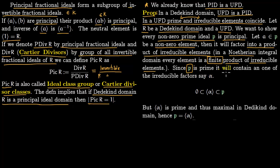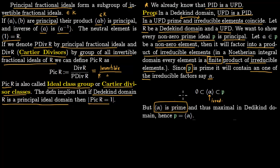Since P is prime it contains at least one of the irreducible factors — call it α. So we have (0) ⊂ (α) ⊆ P. Now α is prime, precisely because in a UFD prime and irreducible coincide, and we started with a Dedekind domain that is a UFD. So α is prime, and in a Dedekind domain prime ideals are maximal. Therefore (α) is maximal, and since (α) ⊆ P with P prime, we must have (α) = P. Hence this prime ideal is generated by α.